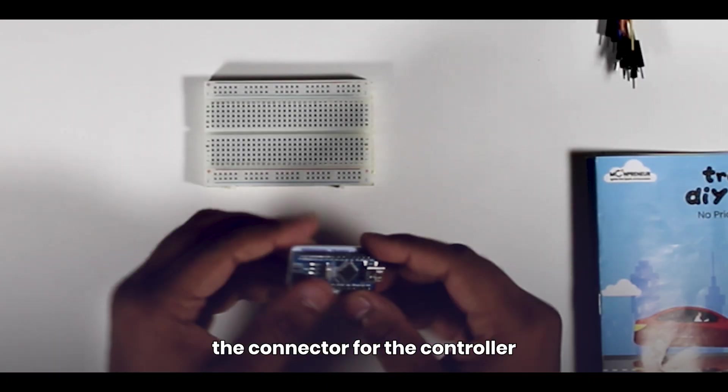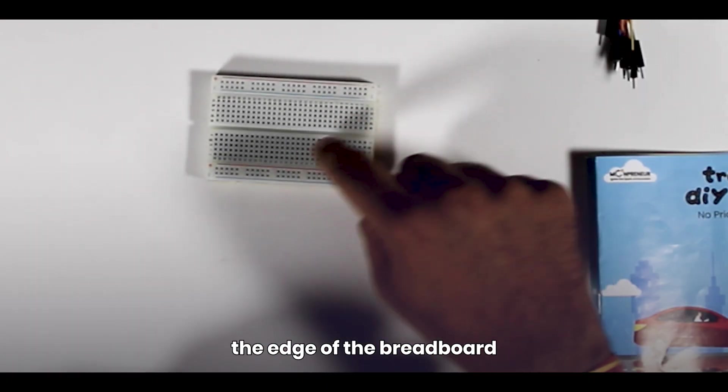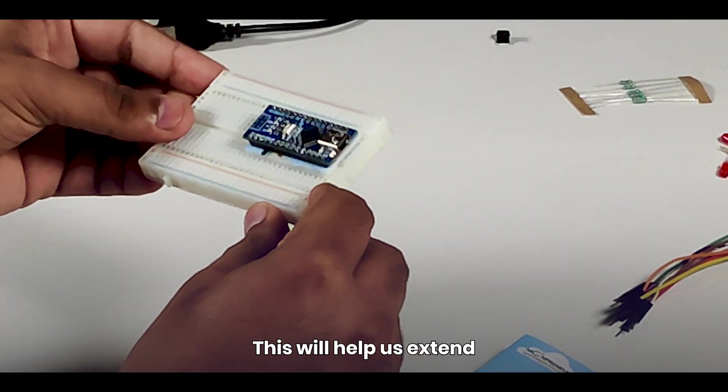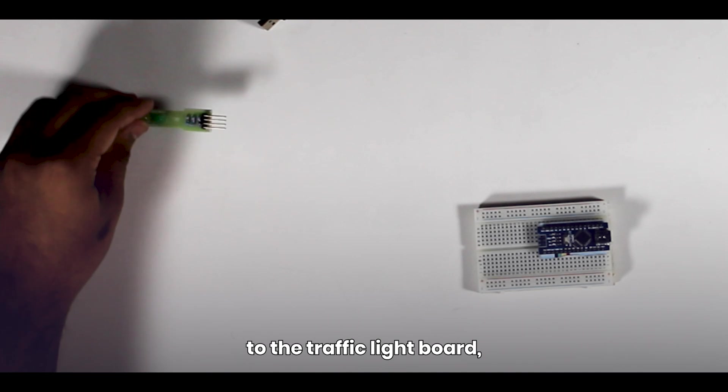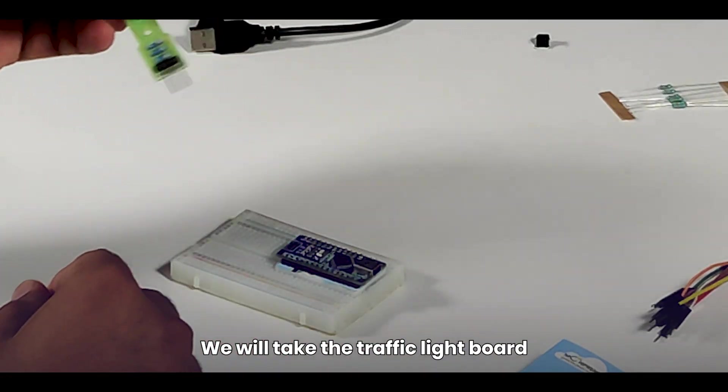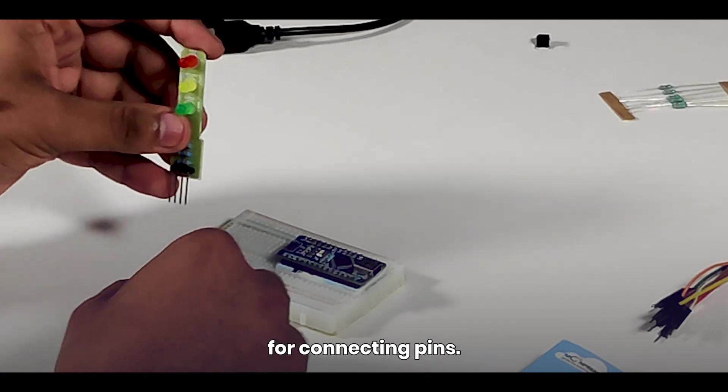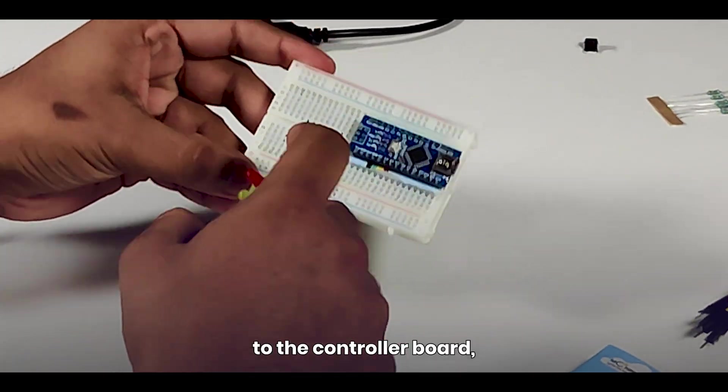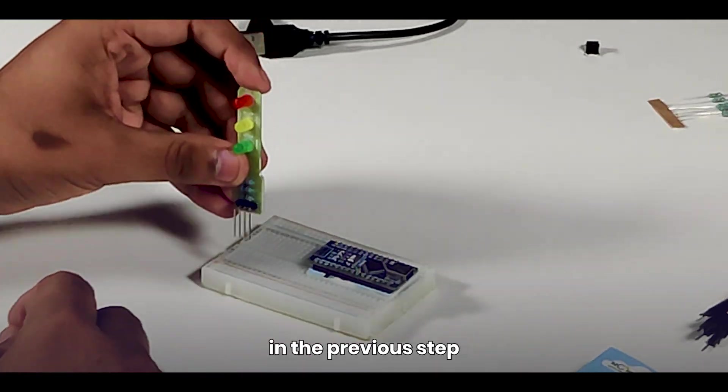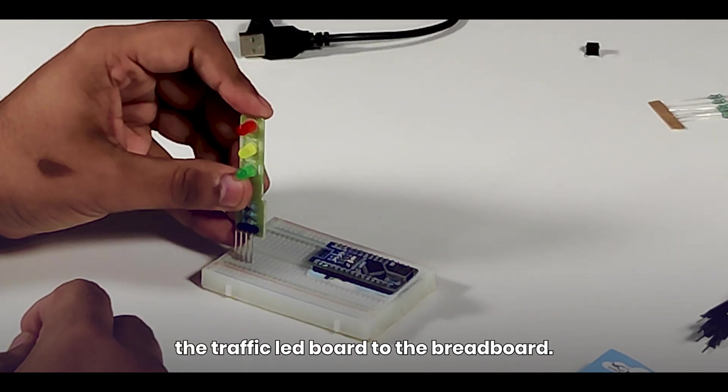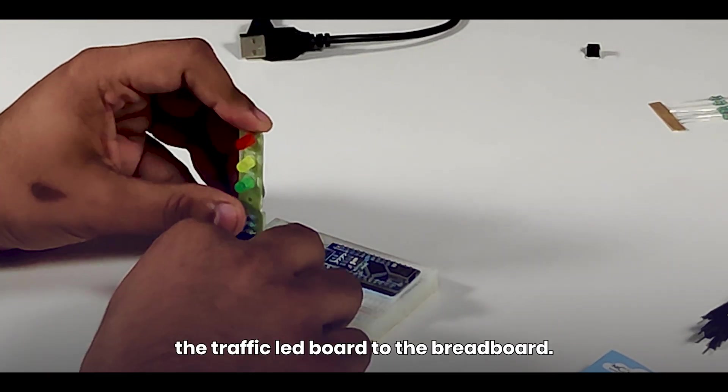The connector for the controller board should be on the edge of the breadboard, and pins are also aligned. This will help us extend the connection to the traffic light board, which we will do in the next stage. We will take the traffic light board and will find out its four connecting pins. We will have to connect these four pins to the controller board, which we assembled in the previous step, with the help of the wires provided. But before that connect the traffic LED board to the breadboard.